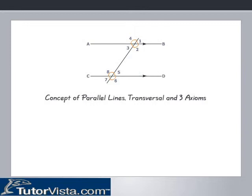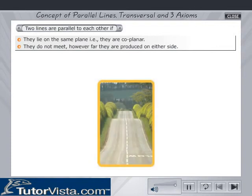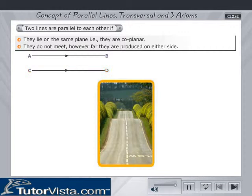Let us now learn some concepts of parallel lines and transversal, and also some axioms on parallel lines. Two lines are parallel to each other if they lie on the same plane, i.e. they are coplanar. They do not meet however far they are produced on either side. Here AB and CD are parallel lines.